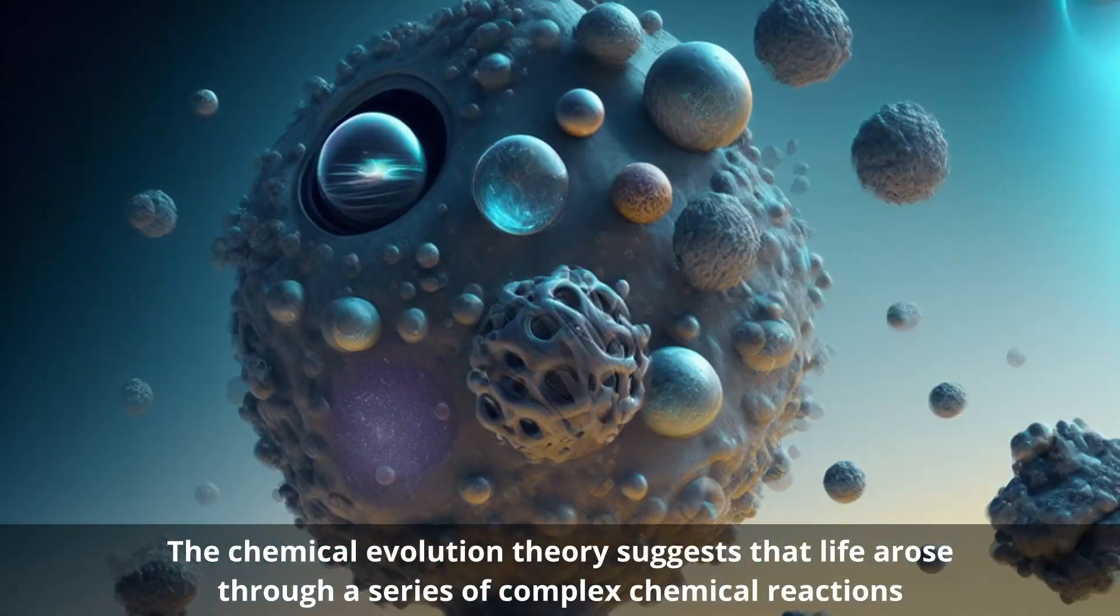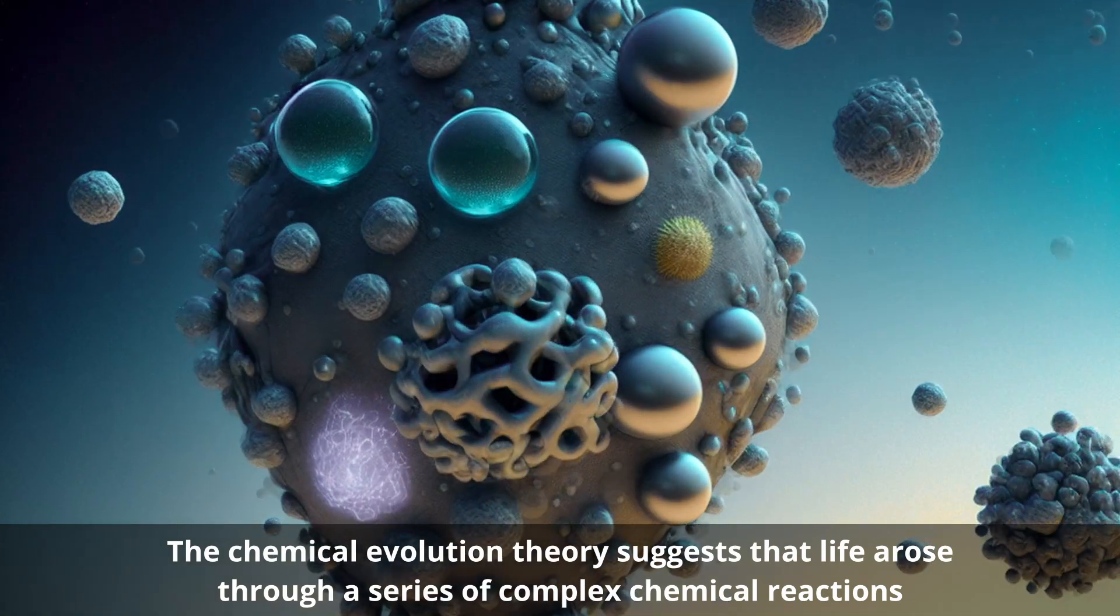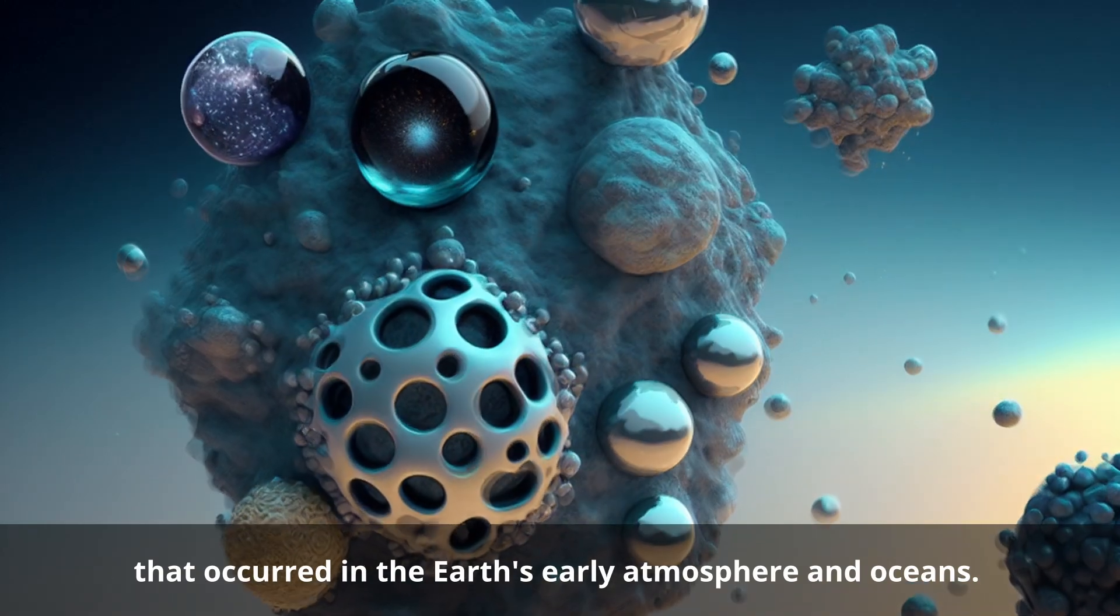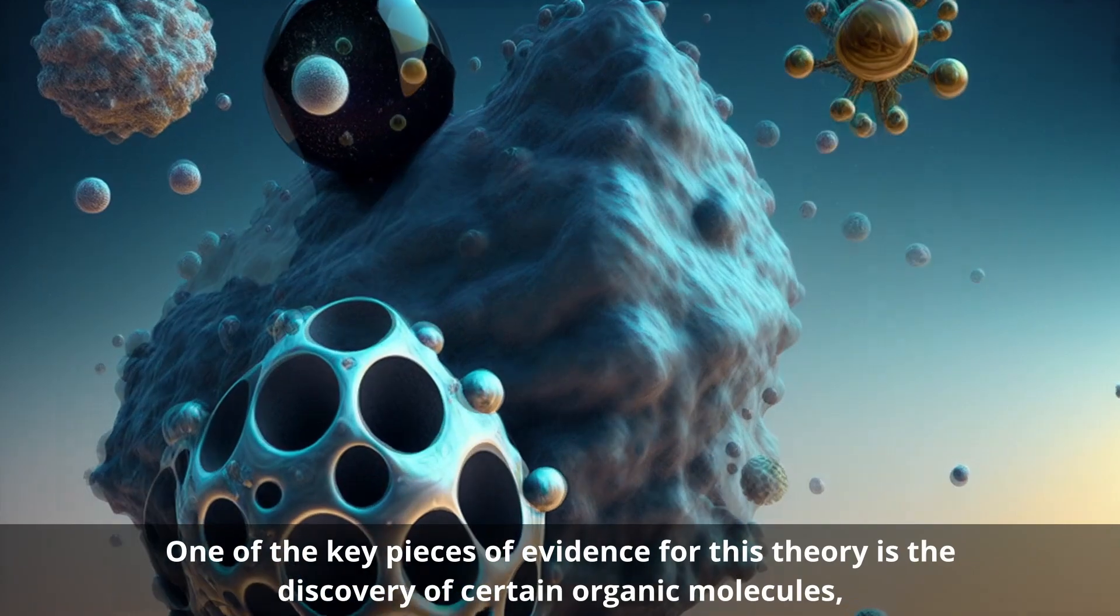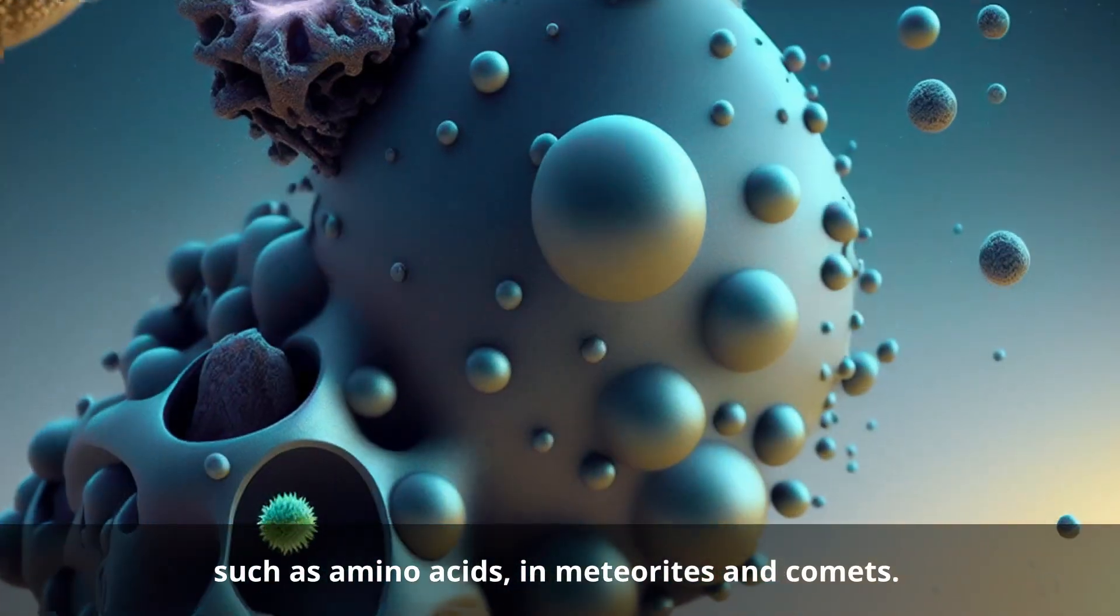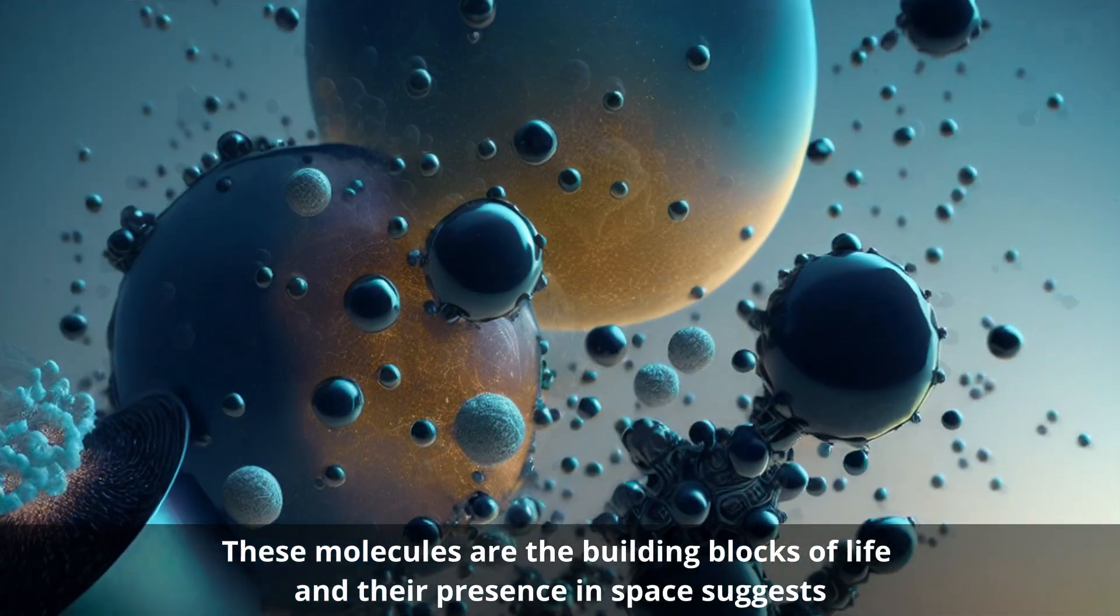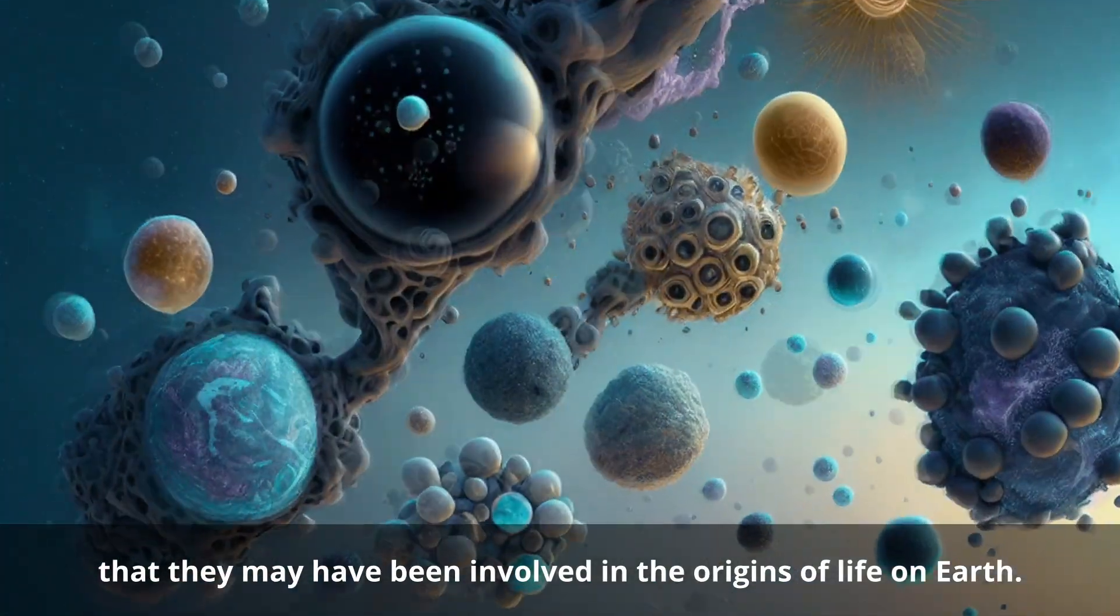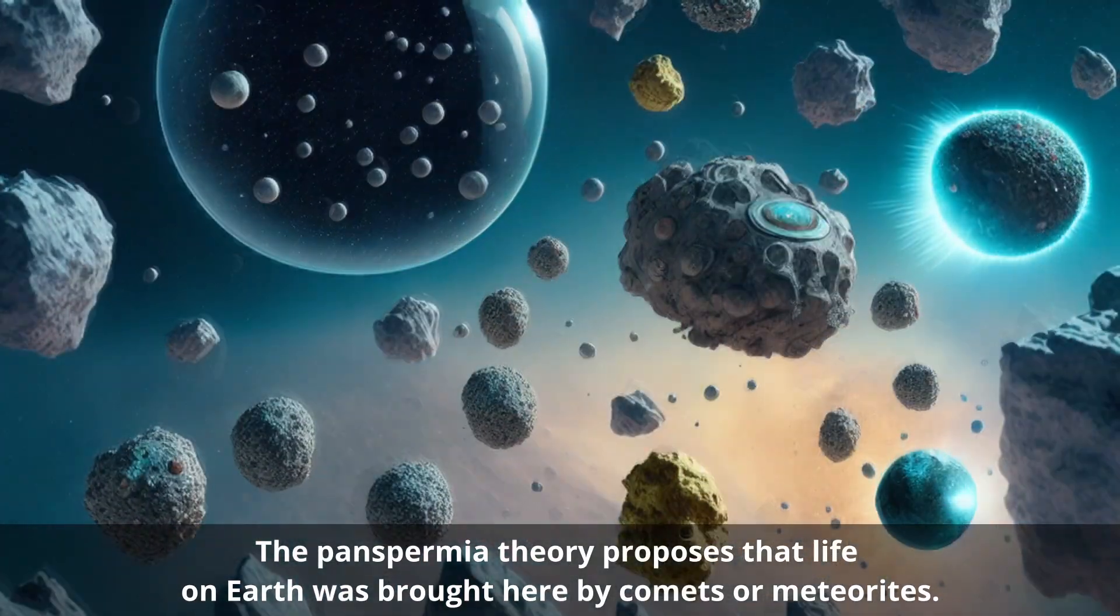The chemical evolution theory suggests that life arose through a series of complex chemical reactions that occurred in the Earth's early atmosphere and oceans. One of the key pieces of evidence for this theory is the discovery of certain organic molecules such as amino acids in meteorites and comets. These molecules are the building blocks of life, and their presence in space suggests that they may have been involved in the origins of life on Earth.